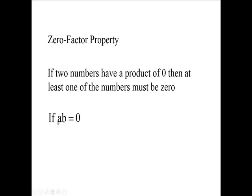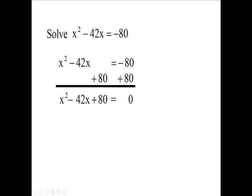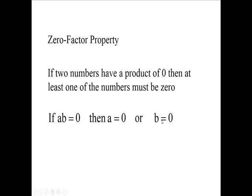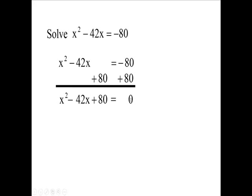So we're saying if a times b, that's the product of a and b, if the product is zero, if a times b is zero, then either a is zero or b is zero. And we're going to use this to help us solve this equation. So we want to have two numbers multiplied together to give you zero.